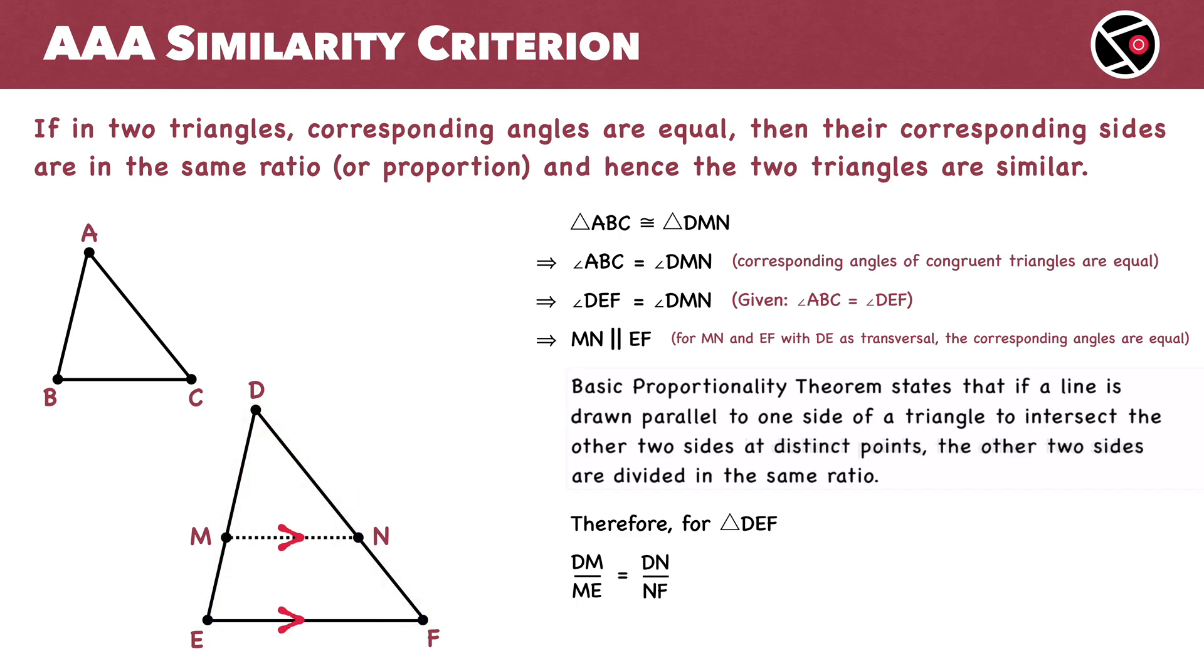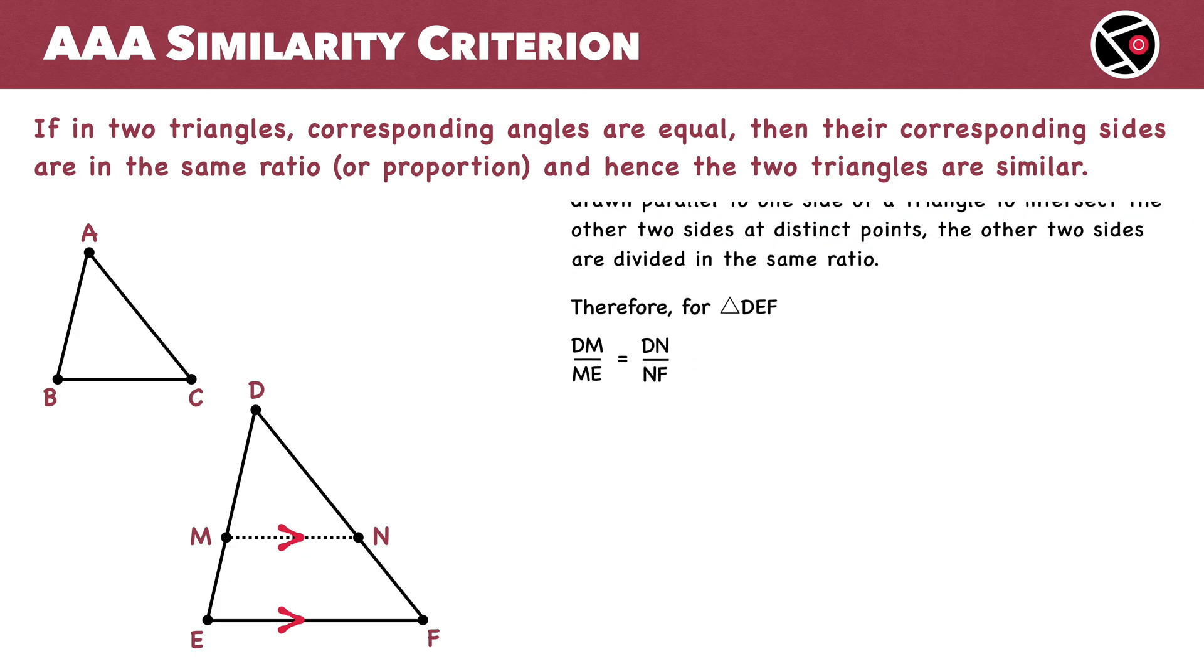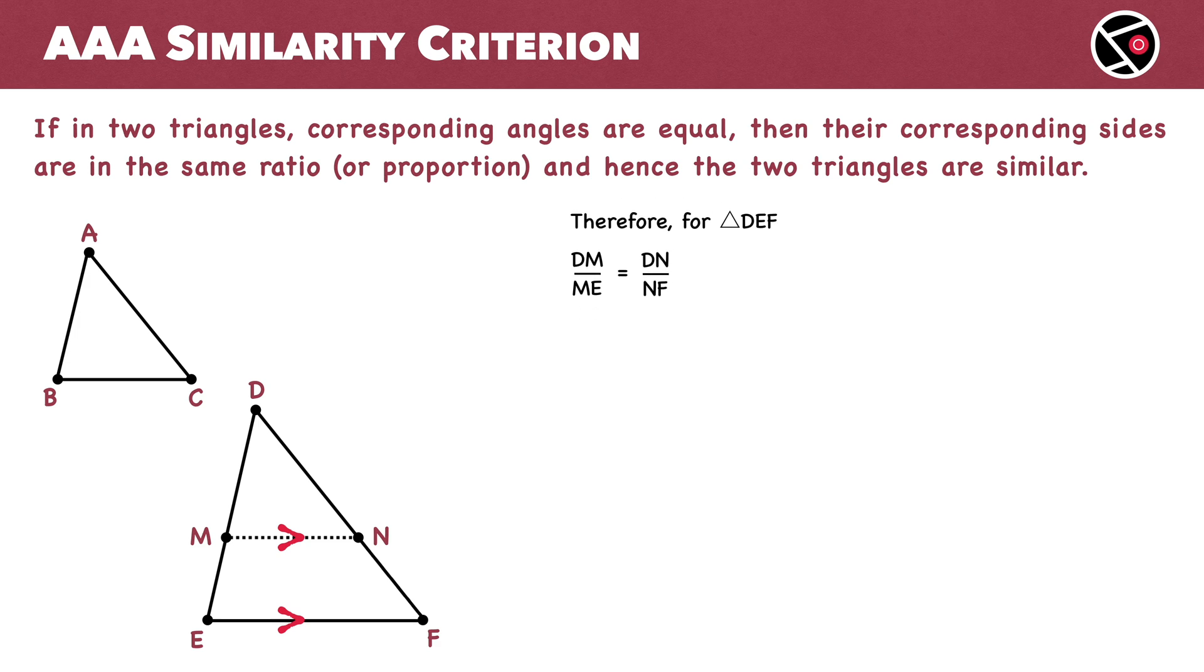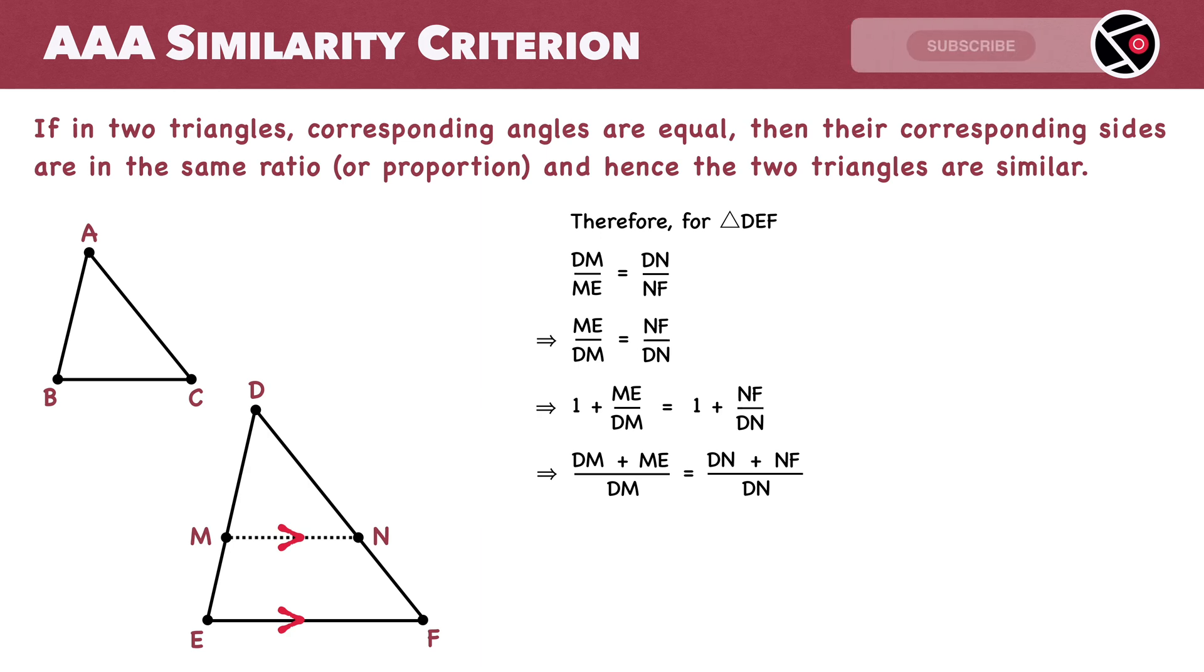I have already proved the Basic Proportionality Theorem in another lesson—make sure to check it out. Moving further, we take the reciprocal of both sides. Next, we add 1 to both sides of the equation. Now, DM plus ME is DE, and DN plus NF is DF.